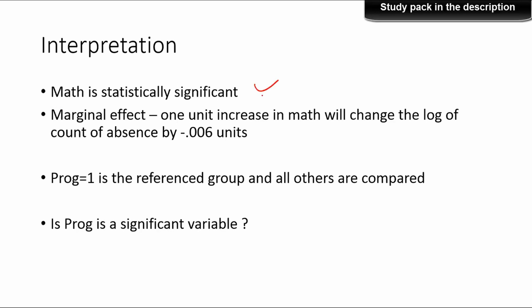Maths is a statistically significant variable, but we still need to determine whether program itself is statistically significant. The marginal effect says that one unit increase in maths will change the log of count of absence by 0.006. The same interpretation applies to the other independent variable, except it is categorical, so the reference category must always be taken into account when interpreting the marginal effect.